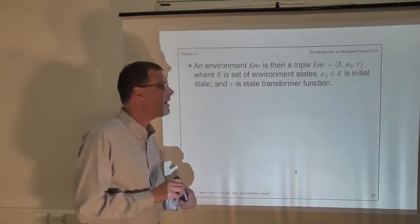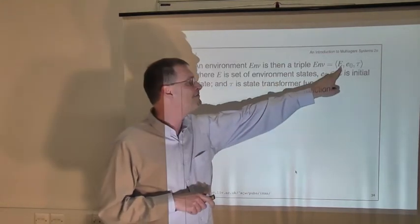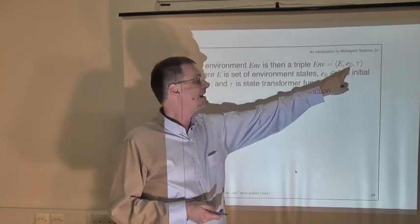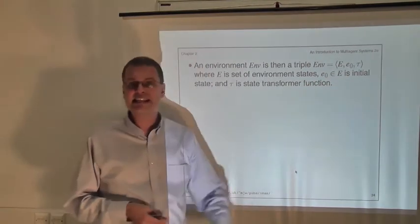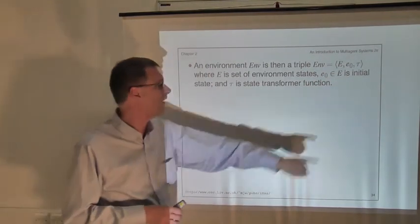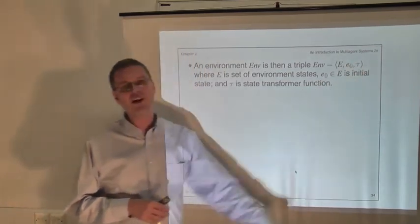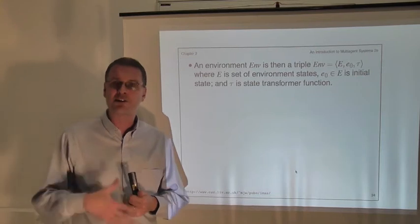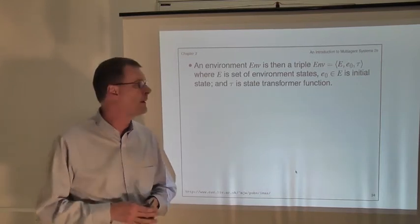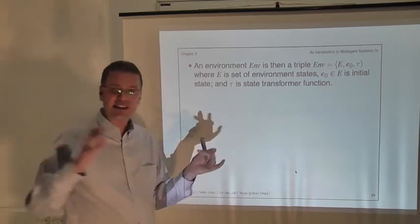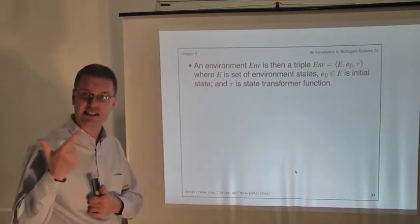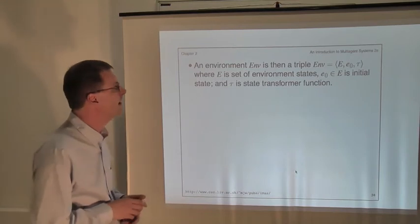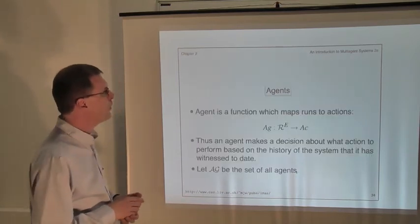To completely describe an environment, we need a set of environment states E — all configurations of the game of chess, for example — an initial environment state e0, that's how the game of chess starts off, and then the state transformer function tau, which says how the game of chess changes, how the configuration of the chessboard changes as a result of people performing moves. Those three components — the set of environment states, the initial state, and the state transformer function — are all we need to describe an environment.